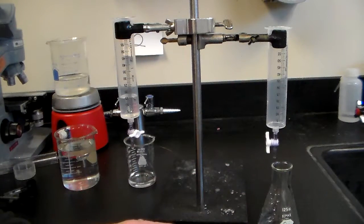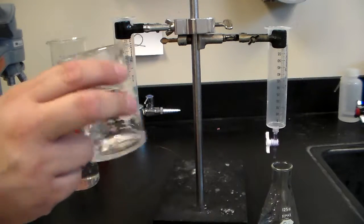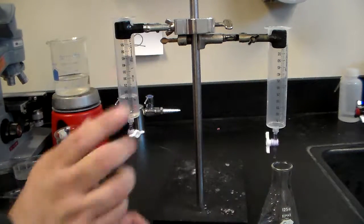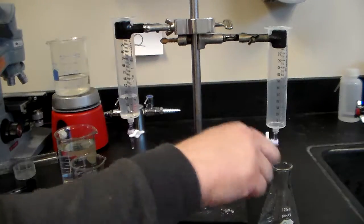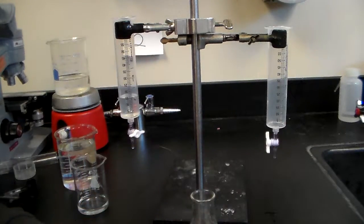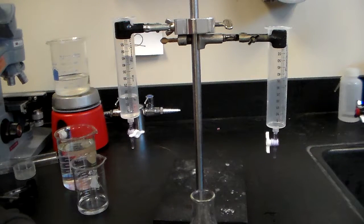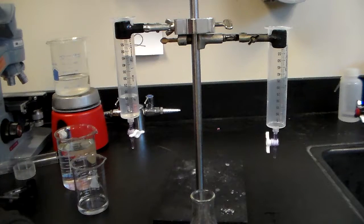Then you can rinse that out, dump that into the waste beaker, and you can take your squeeze bottle and rinse this out with distilled water. Then you're ready to start the whole thing all over again. That's the basic idea behind titration. You're taking a concentration that you know what it is.